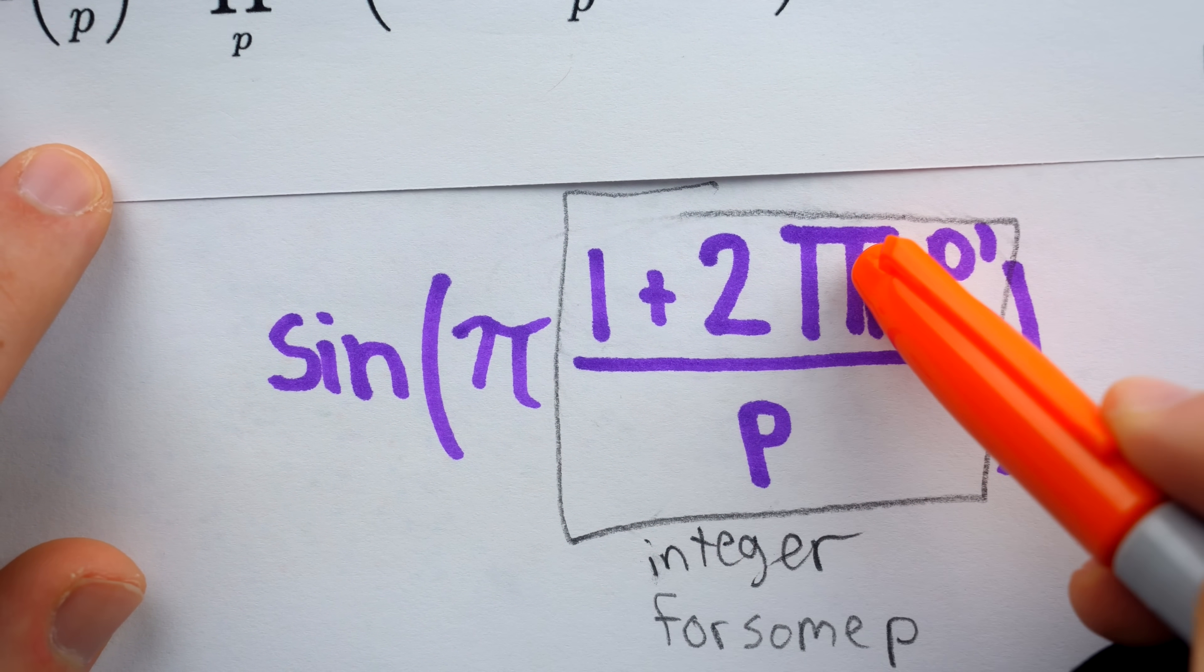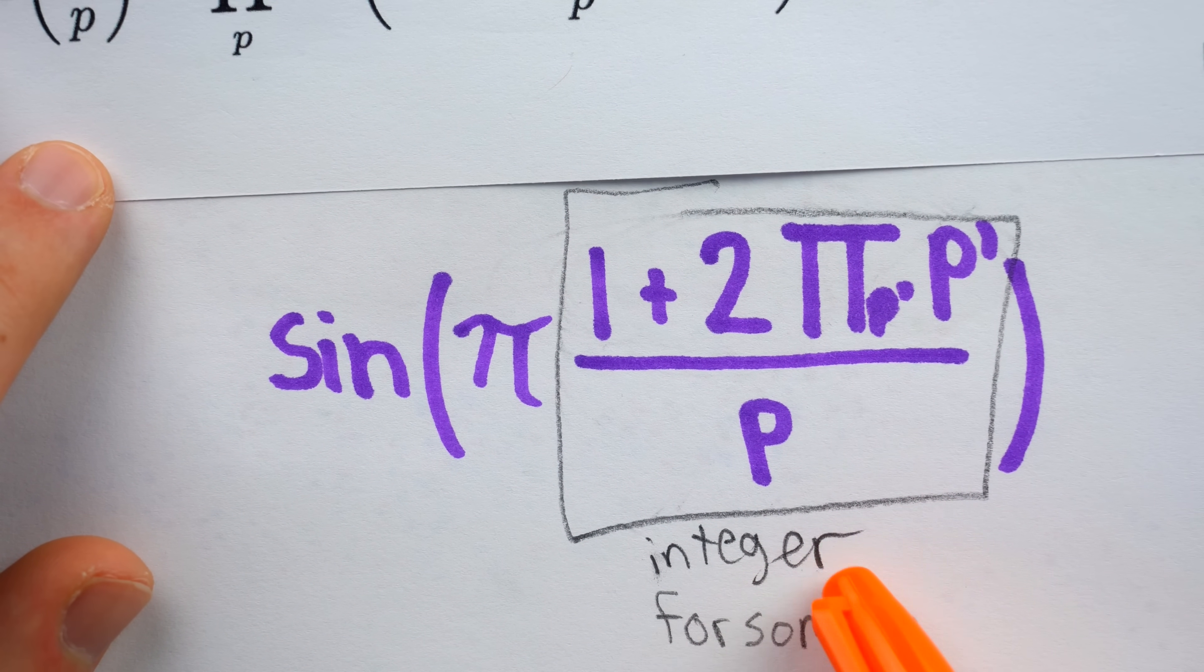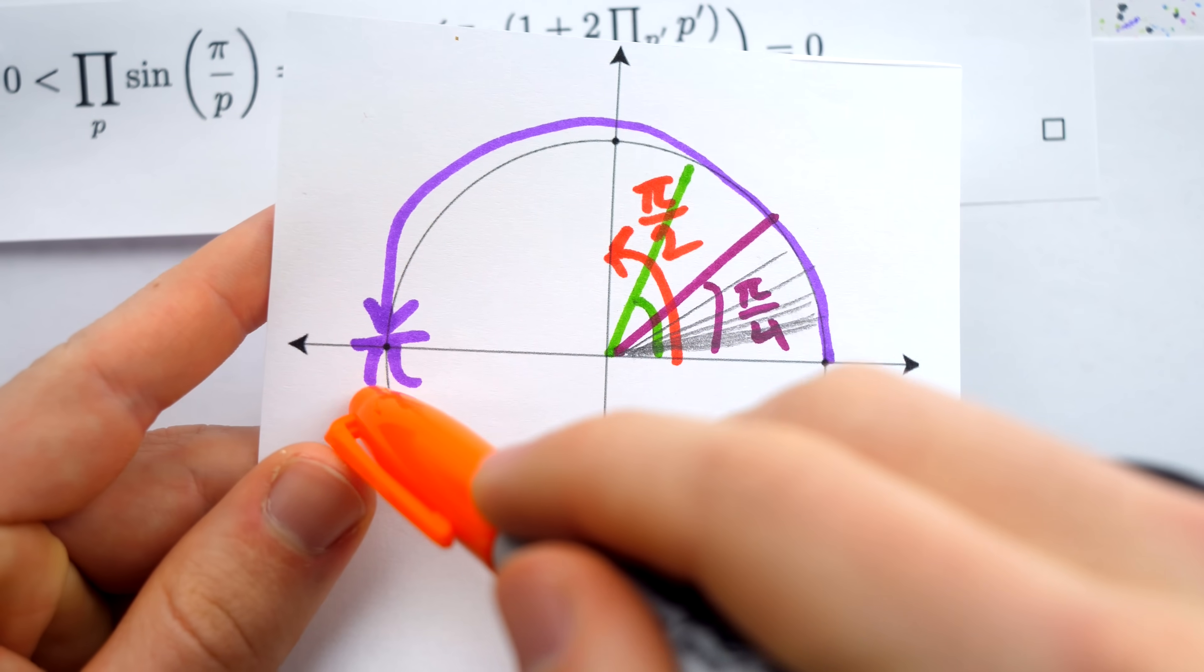And that's going to leave behind an integer multiple of pi. And what did we say about integer multiples of pi?